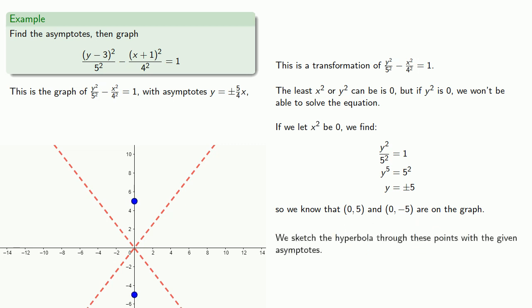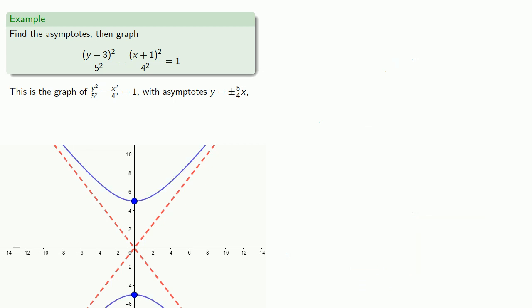And now we can sketch the hyperbola through these points with the given asymptotes. Now we have the graph of y squared divided by 5 squared minus x squared divided by 4 squared equal to 1. But that's not quite the graph we want, so we have to apply a little transformation.